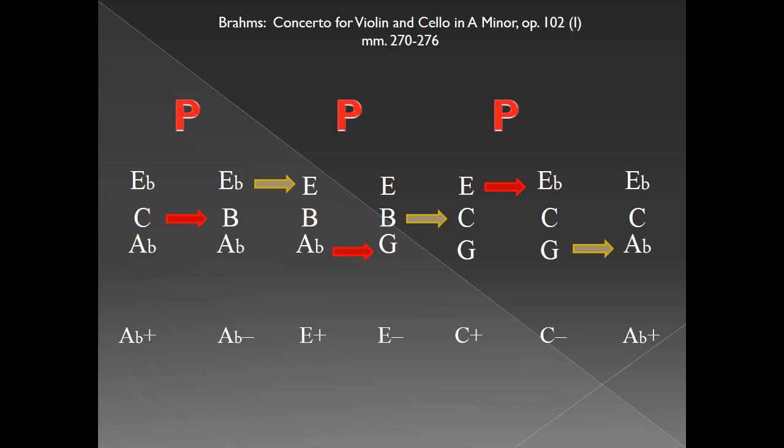Lewin and Cone label our second type of transformation, indicated with yellow arrows, as a leading tone exchange, represented by L. We needn't concern ourselves with the history of this terminology for now. Just know that in our example, L transforms each minor triad into its submediant by moving the fifth of the triad up by a semitone.